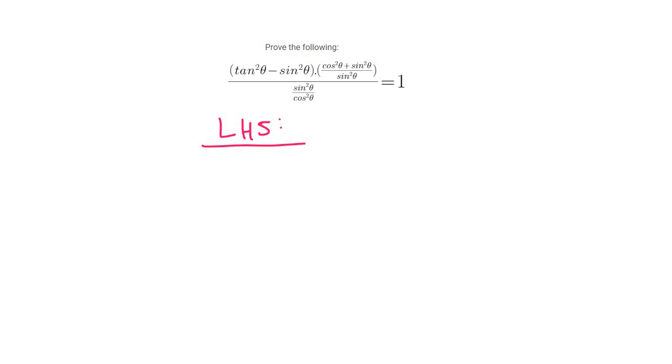What we typically want to do is change tan to sin over cos. So that's going to become sin²x over cos²x minus sin²x.